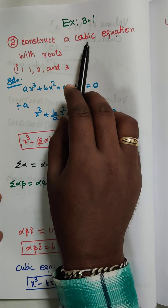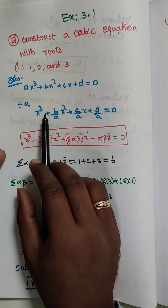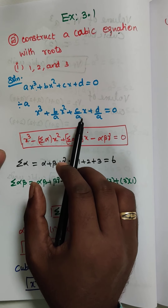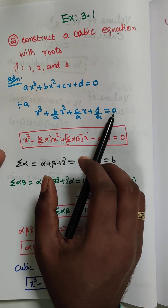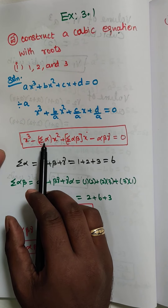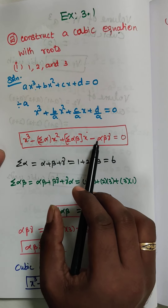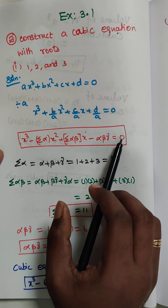We construct the cubic equation. Already we know that the cubic equation formula: a·x³ + b·x² + c·x + d = 0. Dividing by a, we get x³ + (b/a)x² + (c/a)x + (d/a) = 0. The standard cubic equation formula is: x³ − (Σα)x² + (Σαβ)x − αβγ = 0.